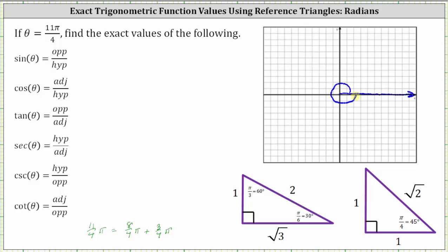Then we'll count by one fourth pi radians. Remember, one fourth pi radians is equal to 45 degrees. So we have eight fourths pi radians, nine fourths pi radians, 10 fourths pi radians, and then 11 fourths pi radians. This is the terminal side of 11 fourths pi radians.